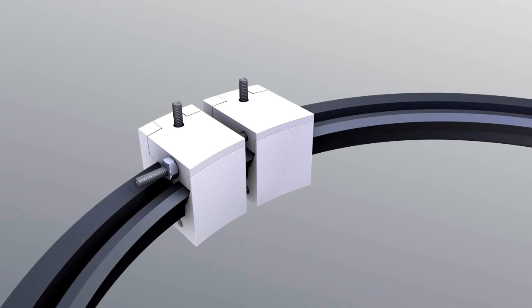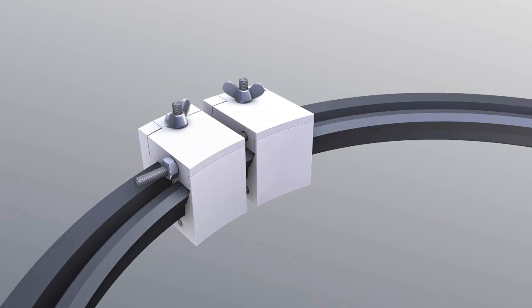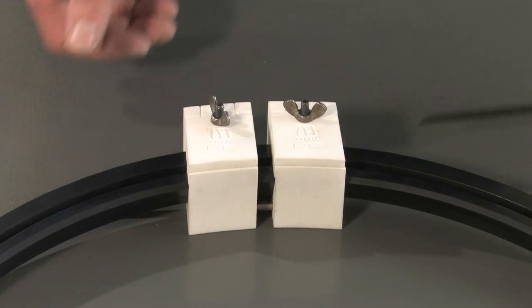Clamp the seal by tightening the two clamping screws of the bonding device. Remove the two fixing screws.